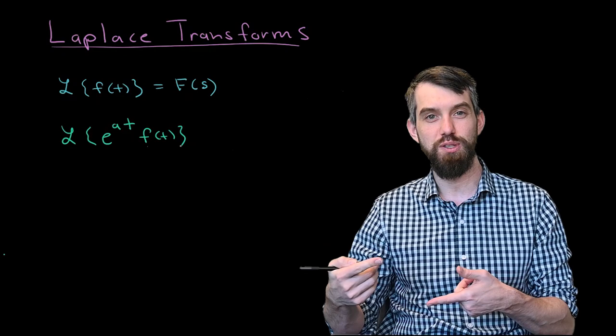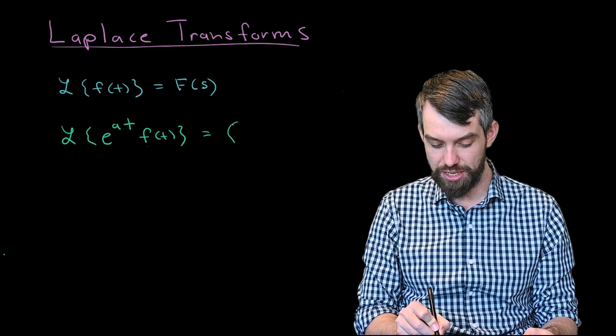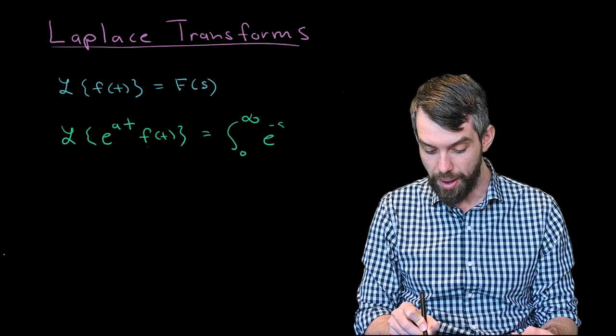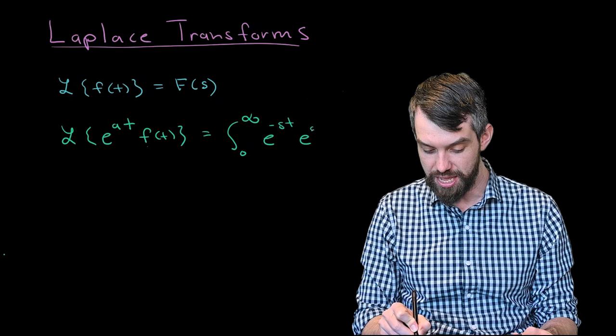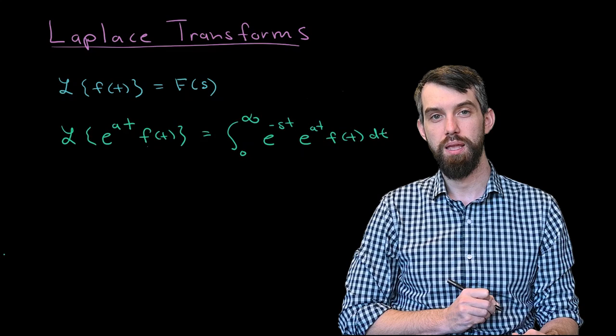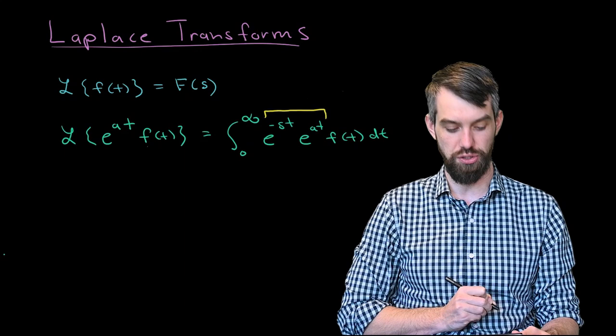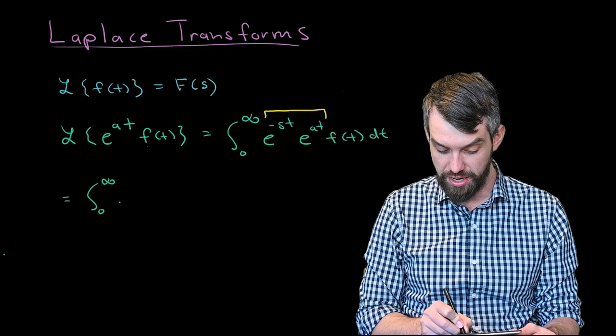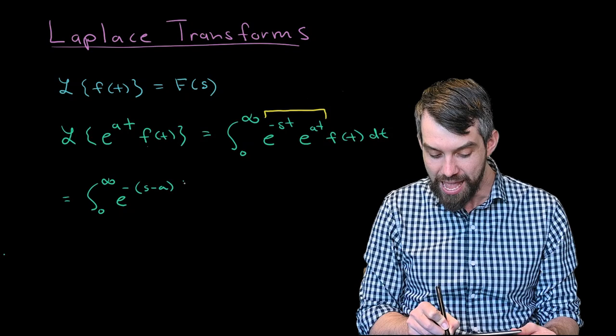That is, I want to know what happens when I multiply by some exponential. By definition, this Laplace transform is defined to be the integral from 0 up to infinity of e^(-st) times whatever I'm taking the Laplace transform of — in this case, e^(at) times f(t) — and then all of that is integrated with respect to t.